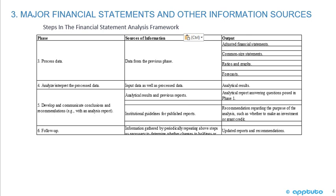Moving to step four — analyze and interpret the processed data — the sources of information would be the input data as well as the processed data, and the output would be the analytical results.